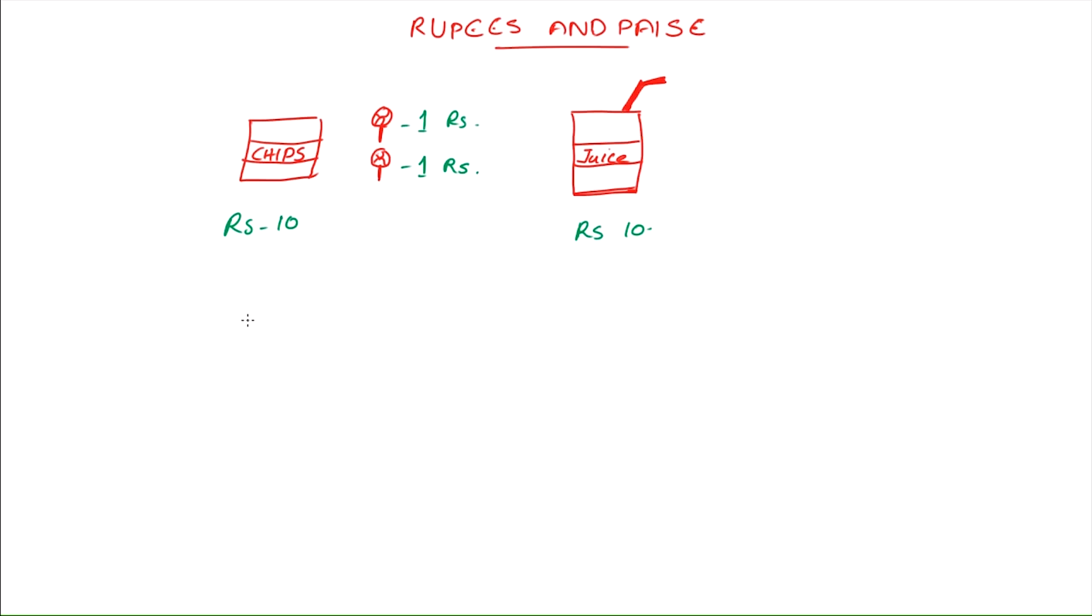We know that one packet of chips is rupees 10, so that's 10, plus you're buying two candies, which is 1 rupee each, so that's plus 2, plus one box of juice, which is rupees 10, so we write plus 10, equals rupees 22.